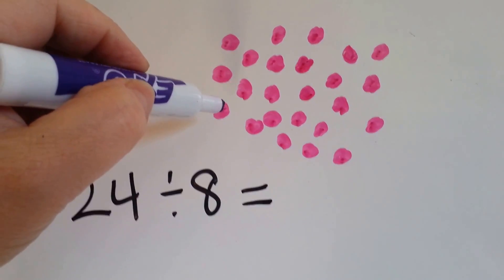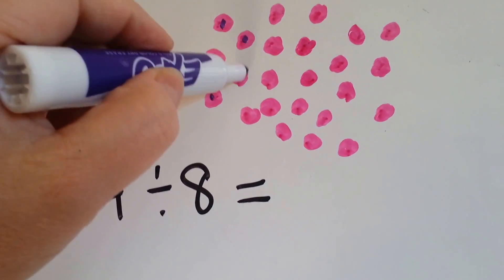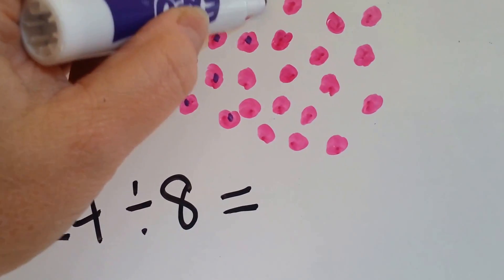Ready? We have 1, 2, 3, 4, 5, 6, 7, 8. So that's one group.